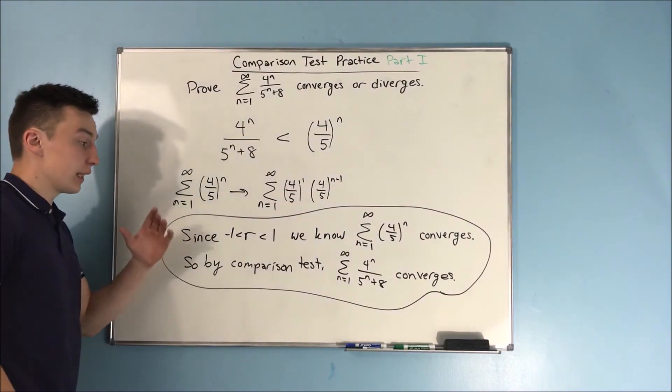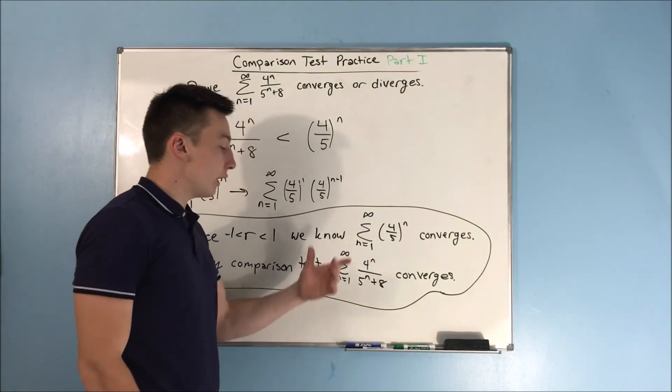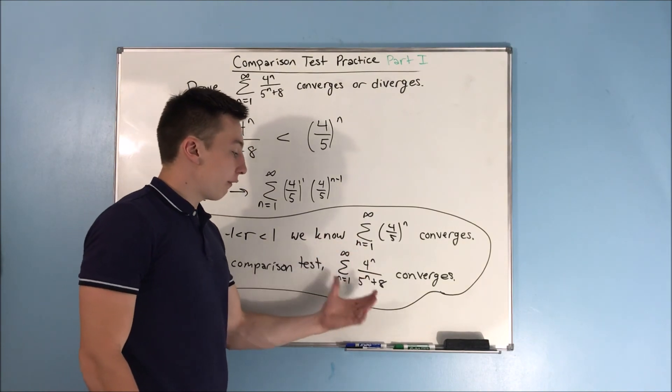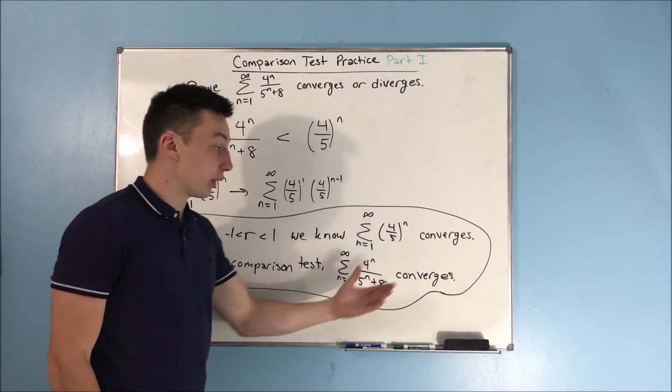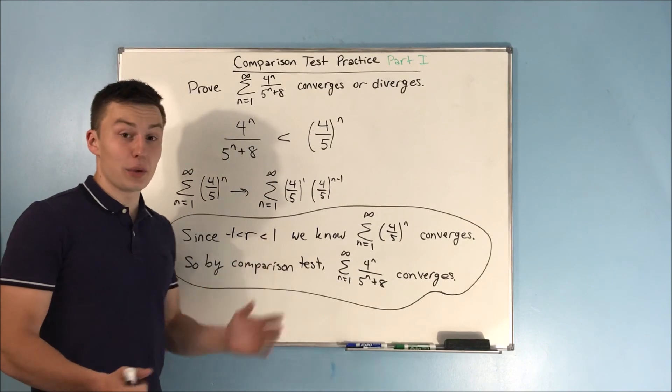So, by the comparison test, we know that the sum from n equals 1 to infinity of 4 to the n over 5 to the n plus 8 is going to converge as well. That's going to do it for this video.